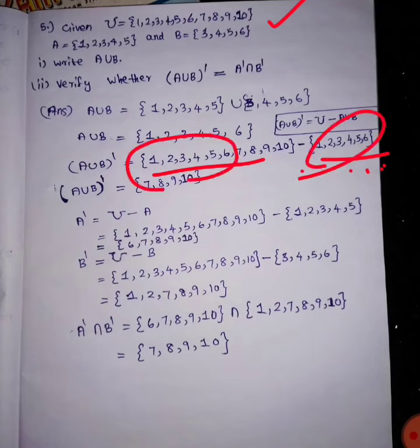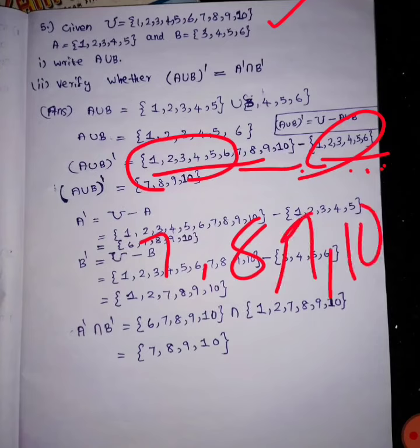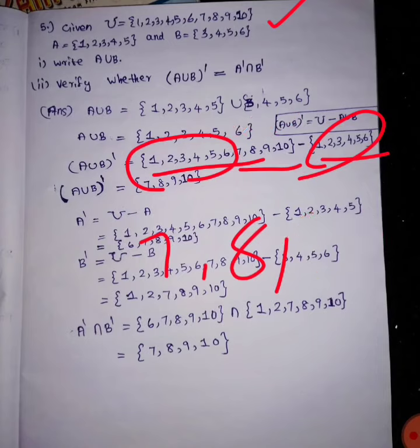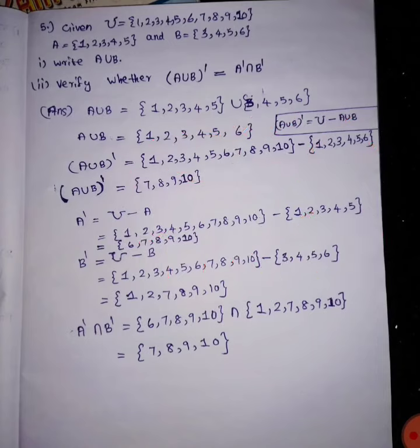That is minus A union B. The other elements are 7, 8, 9, 10. That is A union B all dash. A union B all dash is here. This is the universal set minus A — that is A dash.